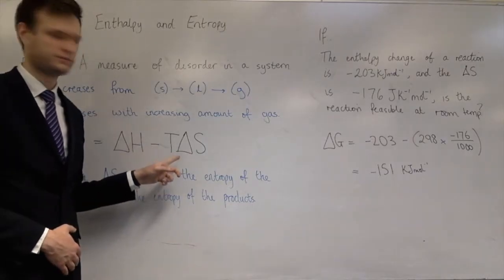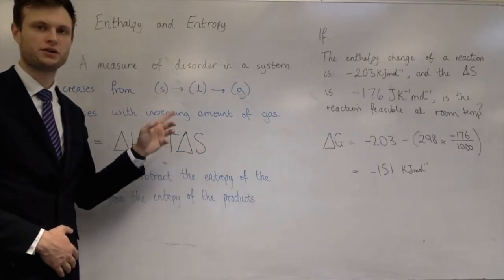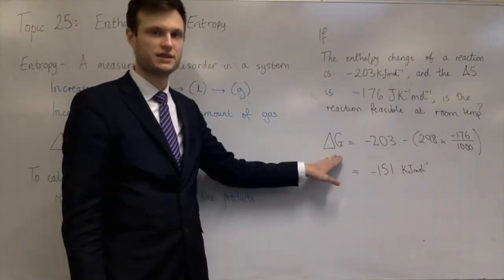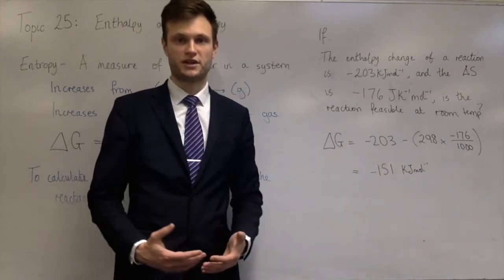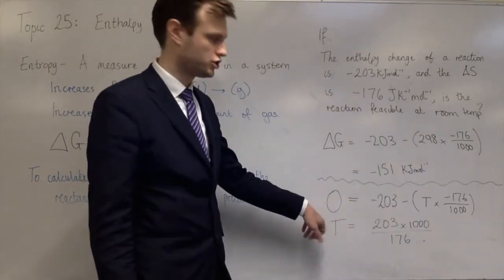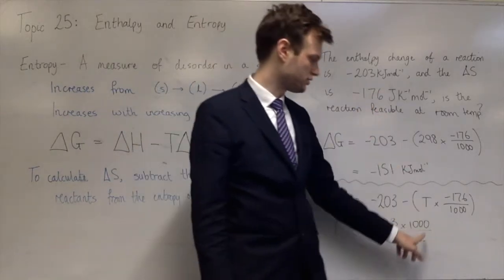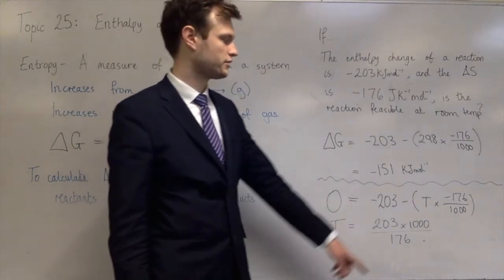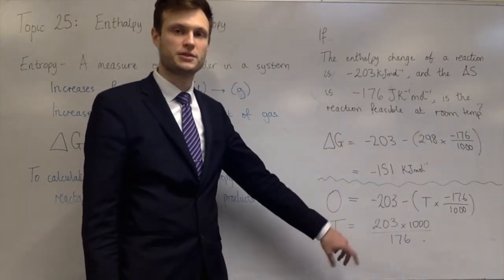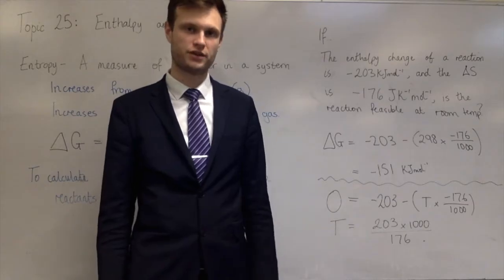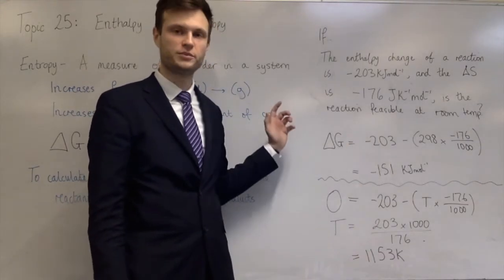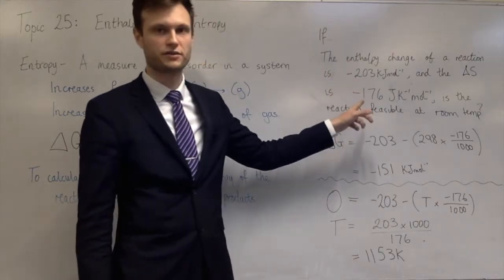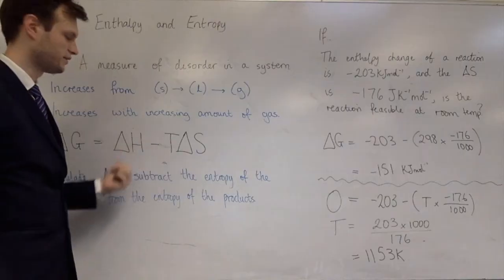But as you increase the temperature, this term is going to get more and more negative. So the next question might be, at what temperature does this stop being feasible? To do that, you set delta G as zero and then solve for the temperature. So I'll put in zero for delta G. Minus 203 is still the enthalpy change. Entropy change is still minus 176 over 1,000 because it's in joules, so I need to change it to kilojoules. And then rearrange to find T. When you plug this in, you end up with a temperature of 1,153 kelvin. Anything above this temperature, the reaction is no longer feasible. Anything below the temperature, and the reaction will work.